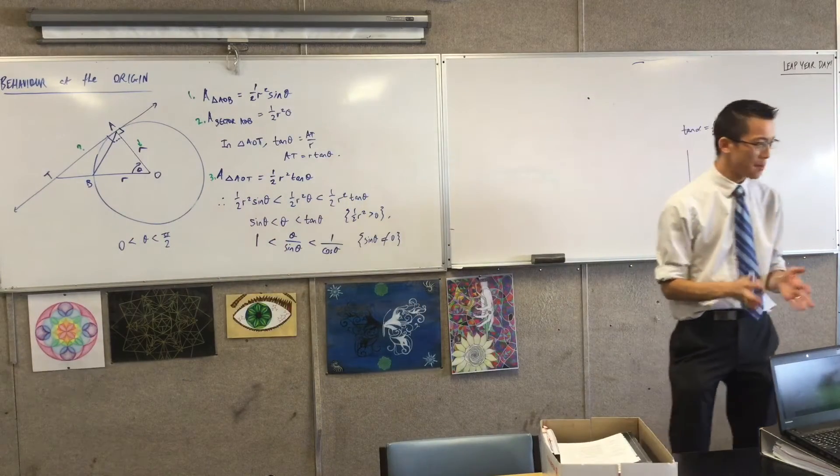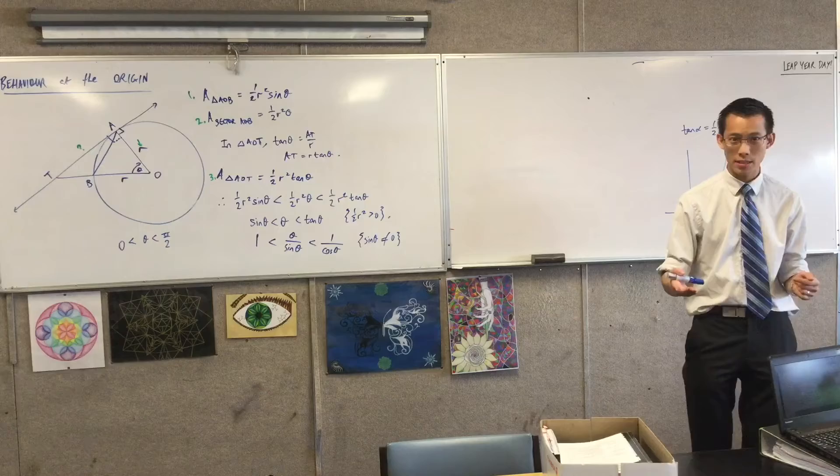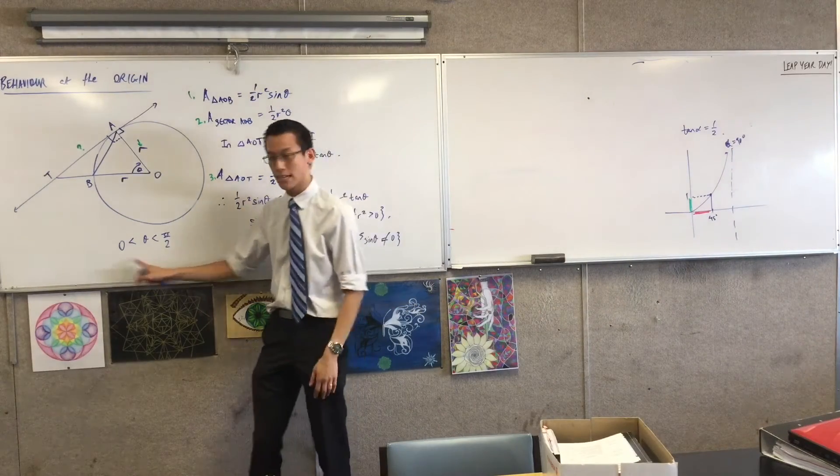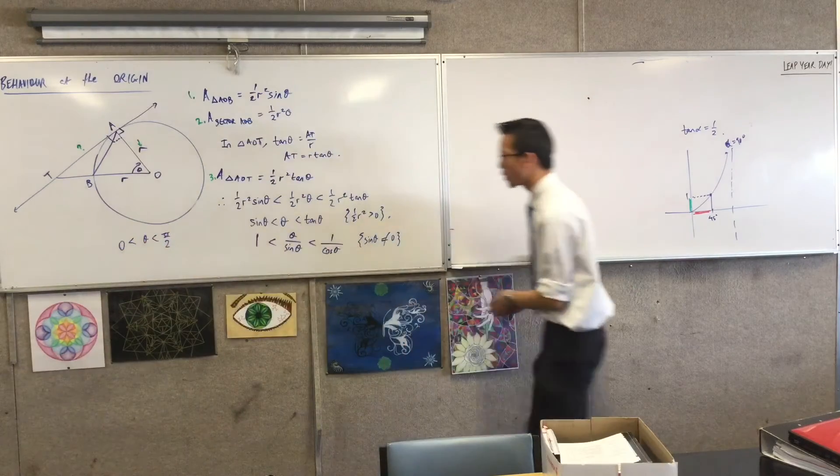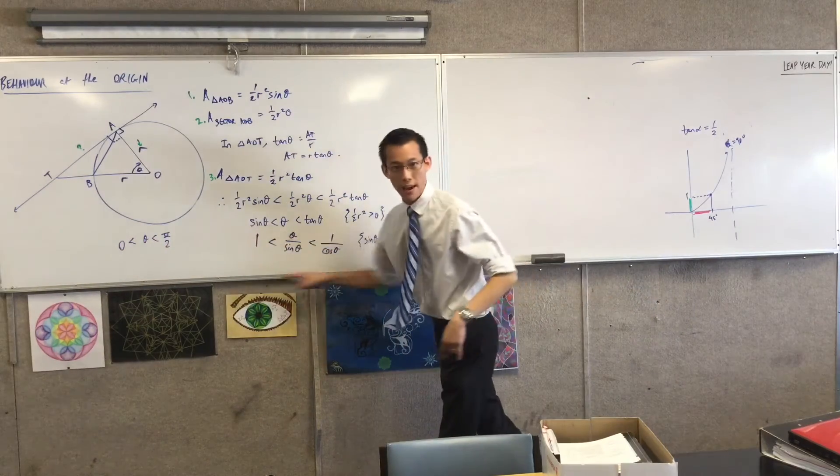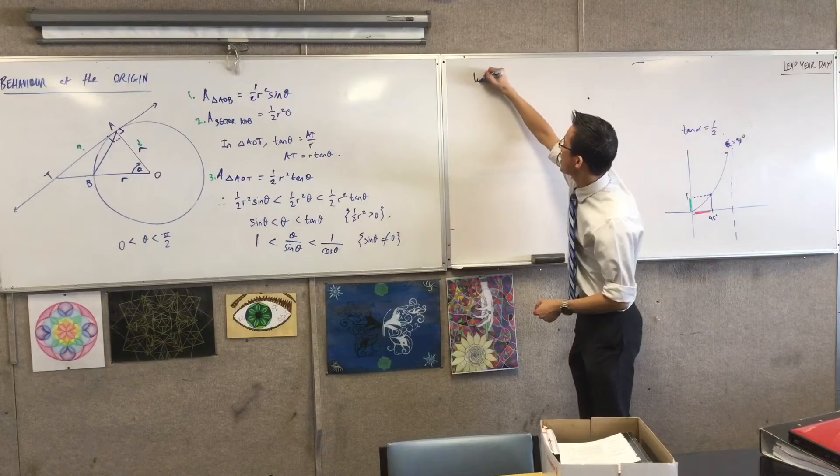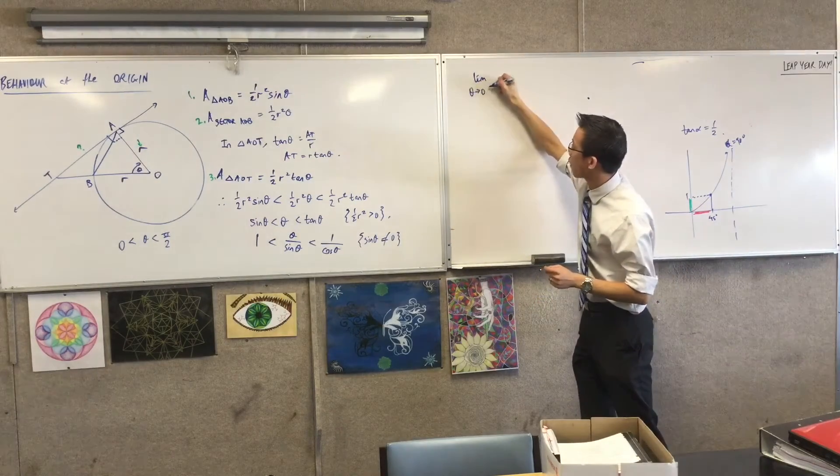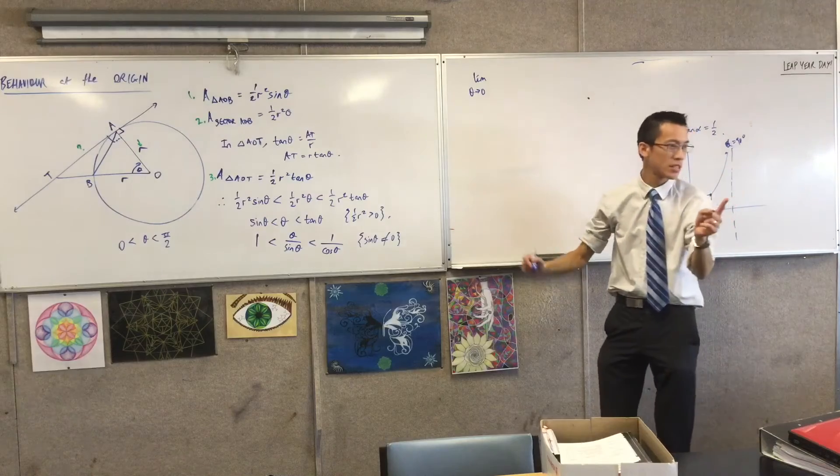So I'm going to do a limit here, but I can only approach in one direction. Does that make sense? Like, I can only approach from the positive direction. You follow with me? Like, theta can't be over there. So therefore, I'm going to say, take this whole thing, everything, and think about its limit as theta is approaching zero, but from the positive direction. So I need to write a plus there.